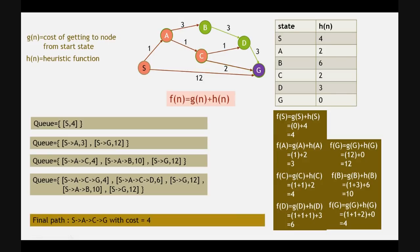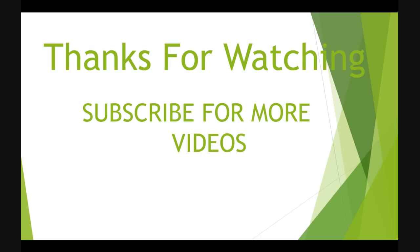This is our final path since g is the goal node, reached with f(n) value of 4. This is how we find the shortest path with minimum cost using the A* algorithm. Please find the important links in the description below, watch all the videos, and please subscribe. Thanks for watching.